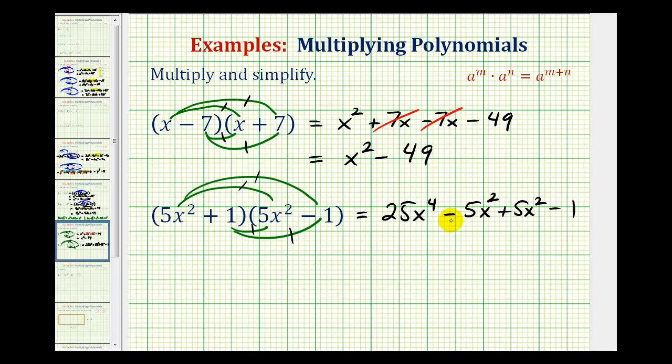Notice once again we have two like terms here in the middle, but their sum is zero. So we're left with twenty-five x to the fourth minus one.